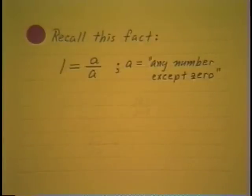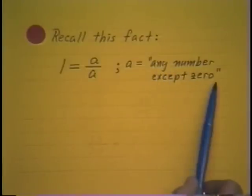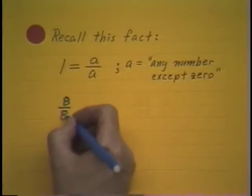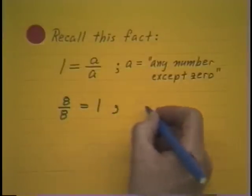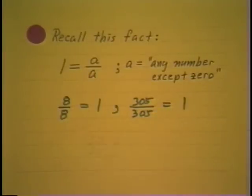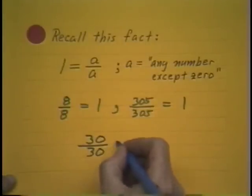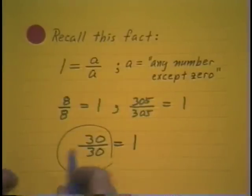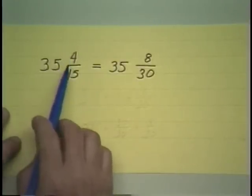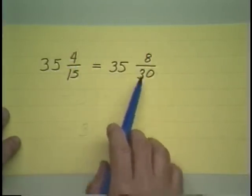Let's pause to recall some simple facts. 1 is the same thing as any number divided by itself — for example, 8 divided by 8, or 305 divided by 305, or in our case specifically 30 divided by 30. Now let's see what we are going to do with that fact. Recall that the top was 35 and 4 fifteenths, which after getting common denominators became 35 and 8 thirtieths.